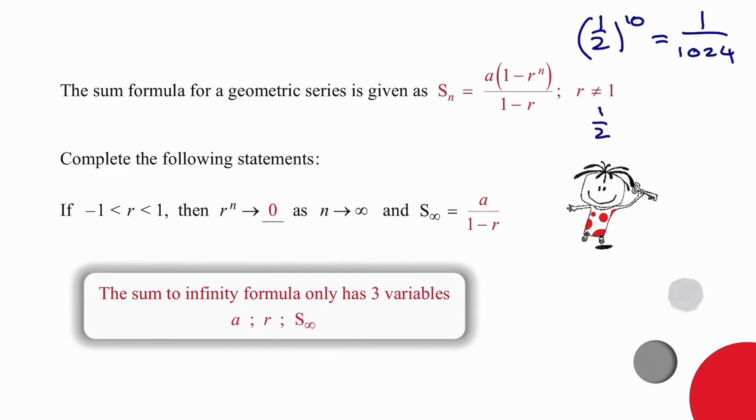But if we took 1 over 2 and raised it to the power of 10 million, which is still not infinitely large, the answer would now be very, very small. The larger that index is, the smaller the result becomes and so we eventually decide that we can accept the fact that as n tends to infinity, r to the n will tend to zero.